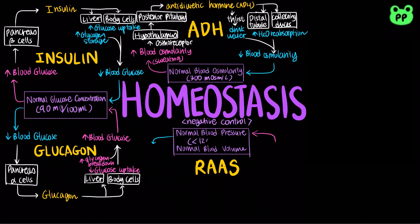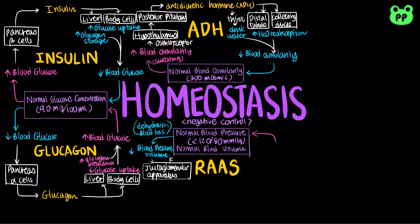The normal human blood pressure falls below 120 over 80 millimeters of mercury. When blood pressure or volume decreases through dehydration or blood loss, the juxtaglomerular apparatus in the kidneys detects it and produces the protease renin, which cleaves the inactive angiotensinogen produced by the liver to angiotensin 1.